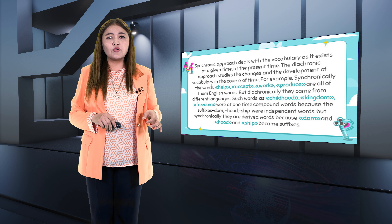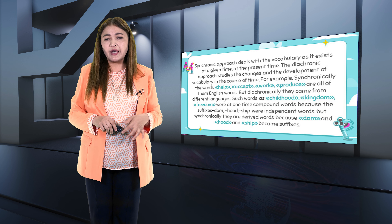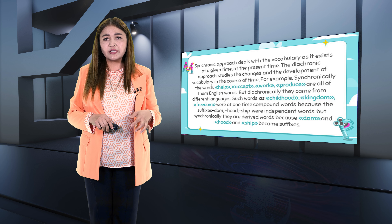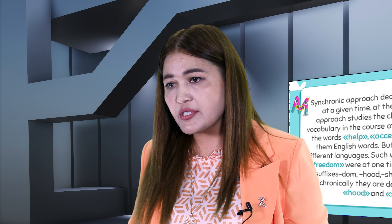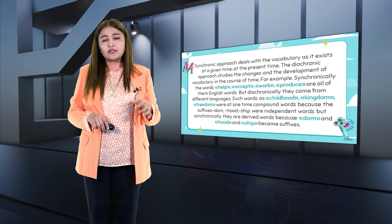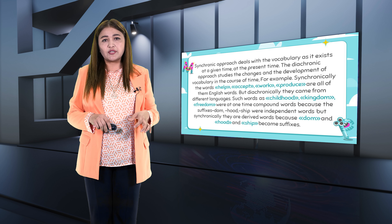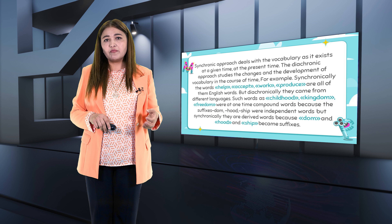Synchronically, the words health, accept, work, and produce are all English words. But diachronically, they came from different languages. Such words as childhood, kingdom, and freedom were at one time compound words because the suffixes -dom, -hood, and -ship were once independent words. But synchronically, they are derived words because -dom, -hood, and -ship became suffixes.